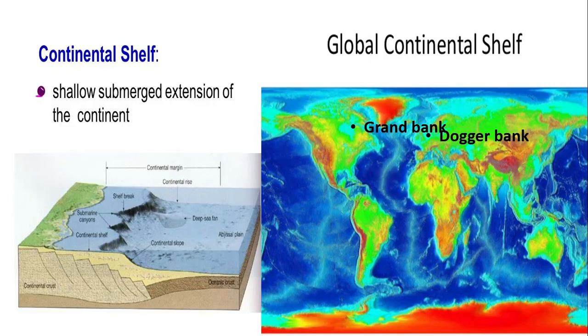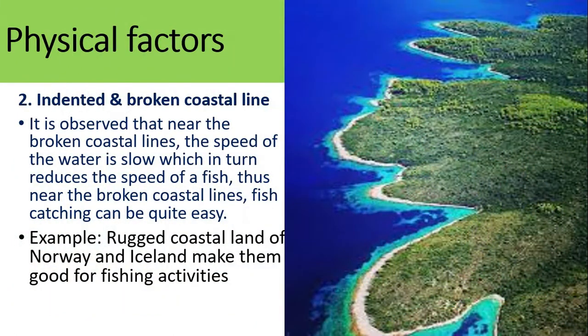The second physical factor is broken coastline. Broken coastline is good for catching fish, as it is observed that near the broken coastline the speed of the water slows down, which in turn reduces the speed of the fish also.